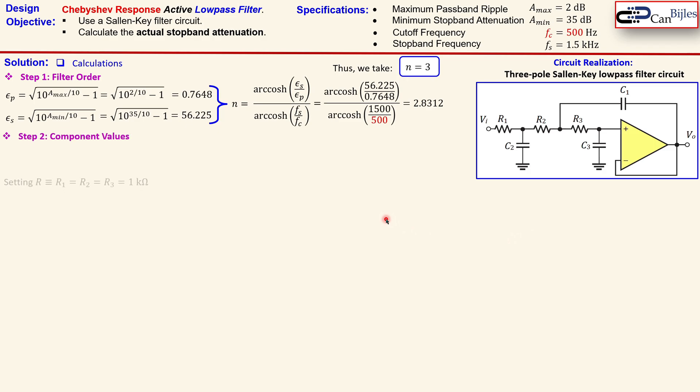Now step two is the component values. We can set R1 is equal to R2 is equal to R3. So all the resistors are the same. So in this case, select it as one kilo ohm. And we just define it as R.